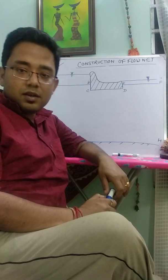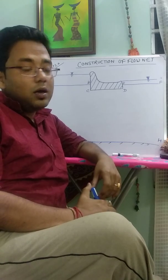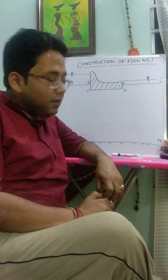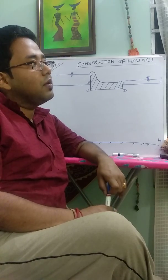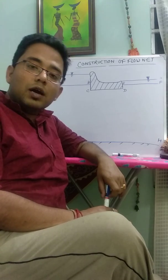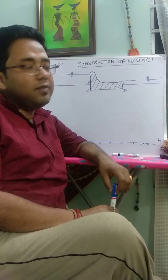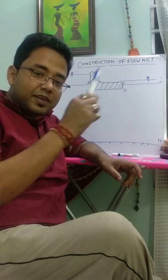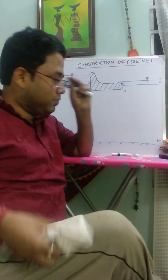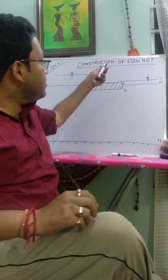In previous class, we already discussed what is the significance of flow net in our engineering field, what are the parameters which we find out by the flow net concept. From the Laplace two-dimensional equation, we get two curves - one is equipotential line and other is flow line - and the total graphical construction is called a flow net. Now today we discuss the construction of flow net.